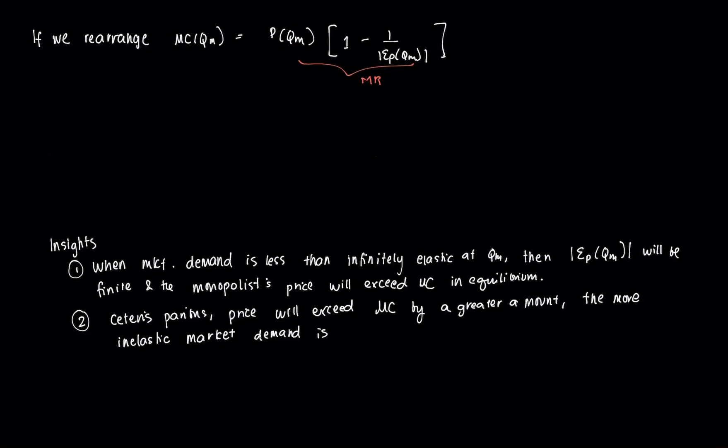So let's simplify this. We have MC(QM) equal to, so notice I can distribute P(QM) here. So that's P(QM) minus P(QM) over the price elasticity of the monopolist.